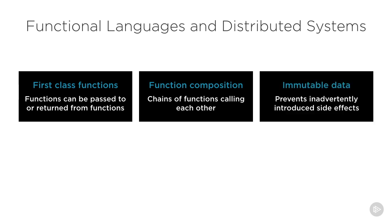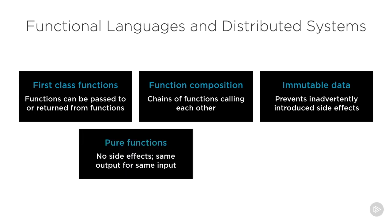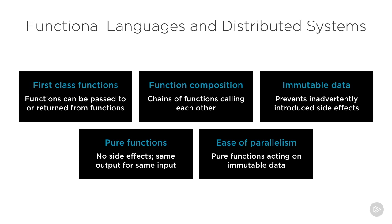Functional languages tend to heavily favor immutable data, because this allows the use of functions without having to worry about inadvertently introduced side effects. The idea of immutable data exists in Java as well — you can simply mark a variable as final — but in Scala, immutable data is the norm rather than the exception. Pure functions have no side effects: the same output will result from running the code with the same input parameters. When you put all of these features together, what you get is ease of parallelism. Immutable data and pure functions combined lead to code that is inherently thread-safe, and code that is inherently thread-safe is inherently easy to parallelize.